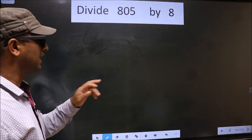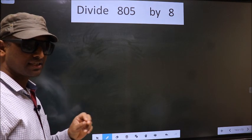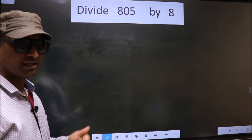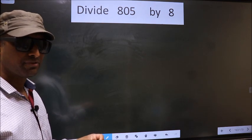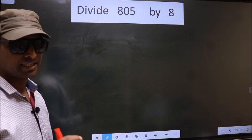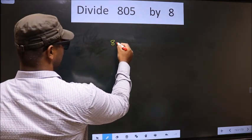Divide 805 by 8. While doing this division, many do this mistake. What is the mistake that they do? I will let you know, but before that we should frame it in this way: that is 805 divided by 8.